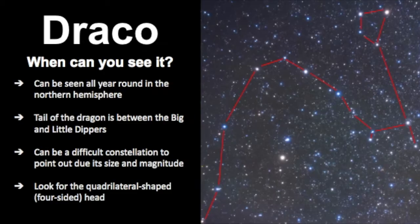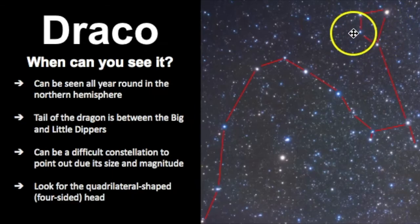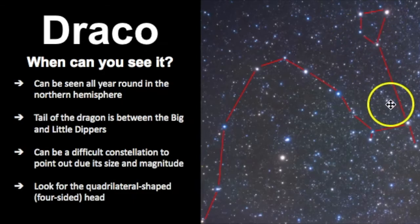There are only three stars that are above the third magnitude, so the rest of them are fourth, fifth, and sixth magnitude. So you really want to seek out dark skies when trying to find this constellation. I also look for this quadrilateral shaped head, and I'll give you some different strategies throughout this video on how to find Draco.